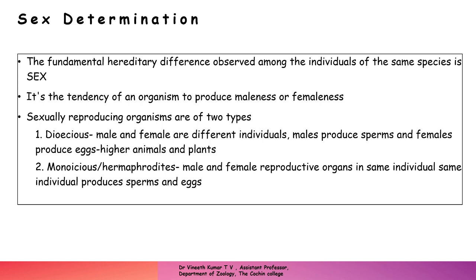In plants you have separate definitions for monoecious as well as hermaphrodites. In monoecious plants, the same plant produces different flowers — it has different male flowers as well as female flowers. The same plant producing both male and female flowers is an example of a monoecious plant. When you come to hermaphrodite plants, the example is hibiscus, where the same flower has both male and female characters — the ovary as well as the stamens are present in the same flower.